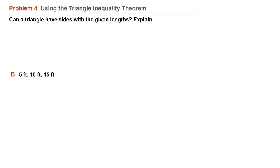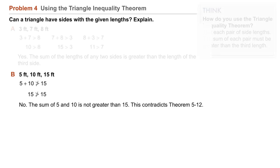B gives us 5 feet, 10 feet, and 15 feet. Well, 5 plus 10 is not greater than 15. It's equal. So no, the sum of 5 and 10 is not greater than 15. And this contradicts Theorem 5-12.